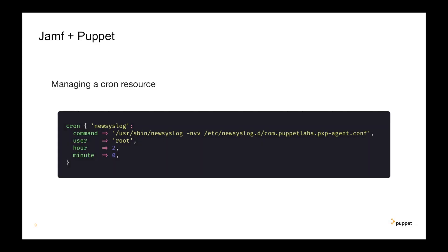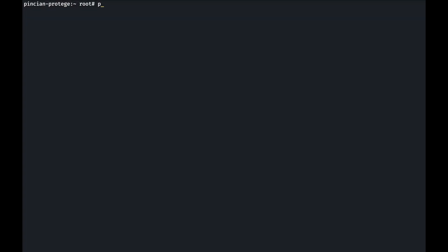Here is the test configuration that I will be applying on a macOS machine. It's a cron resource that manages the pxp-agent log configuration and prints the new syslog config information. I have set up a simple agent-server configuration where we'll try to apply the cron resource and see what's happening.